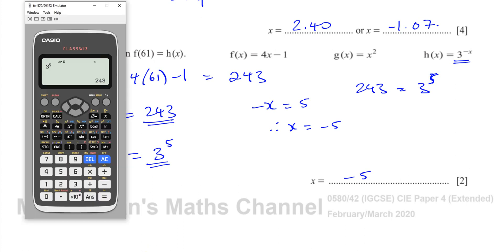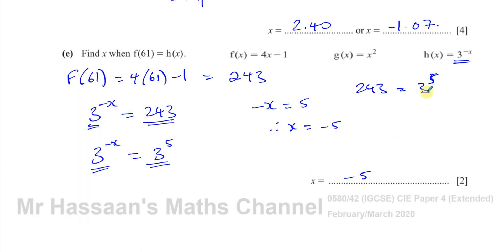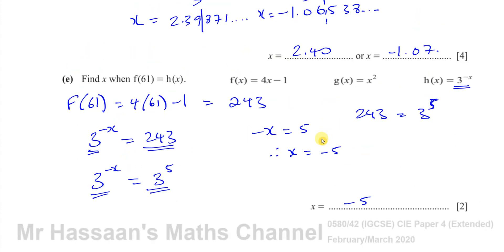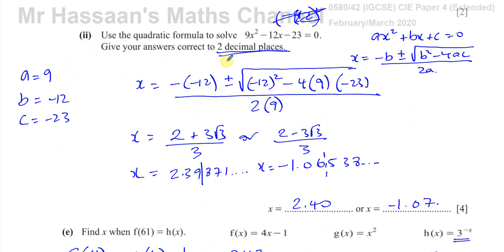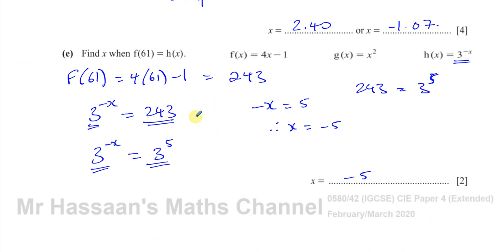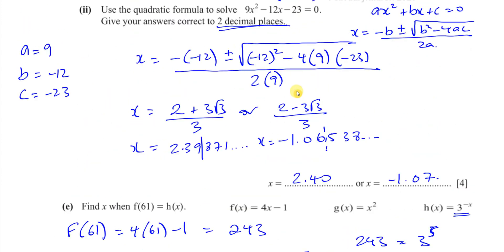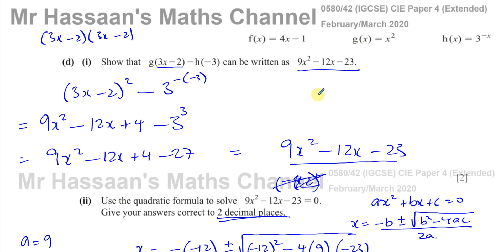We can verify: when x = negative 5, h(negative 5) = 3 to the power of negative (negative 5) = 3 to the power of 5 = 243. That confirms the answer. This concludes question number 10, which covered functions, the quadratic formula, and exponential equations — topics that are often mixed together. Other questions from this paper and from the functions topic can be found in the playlists linked on screen. Thank you for watching and see you soon.